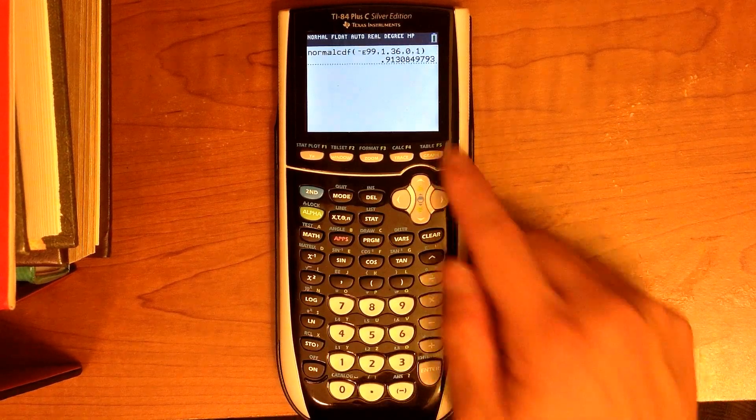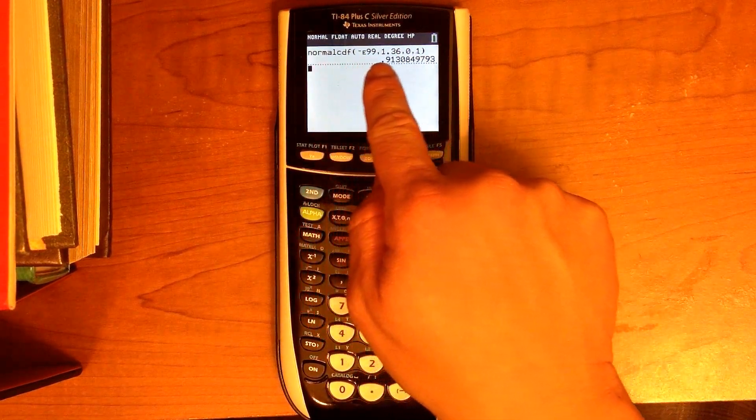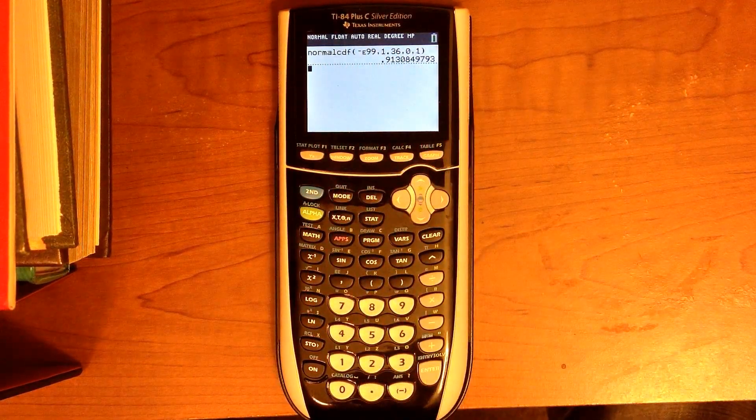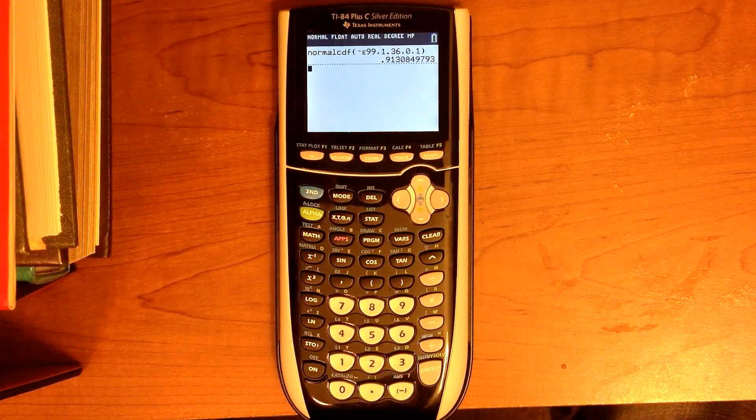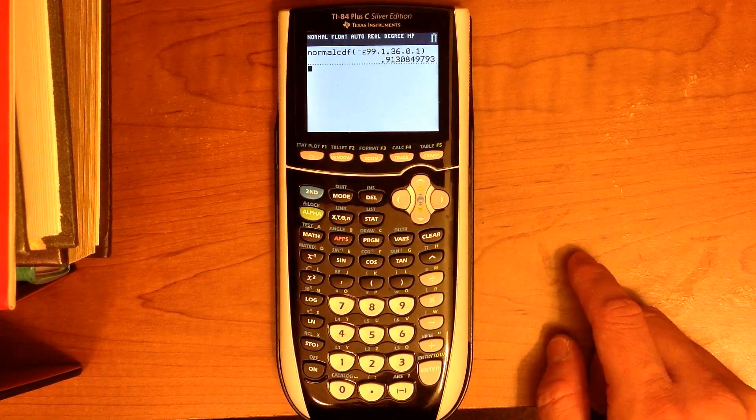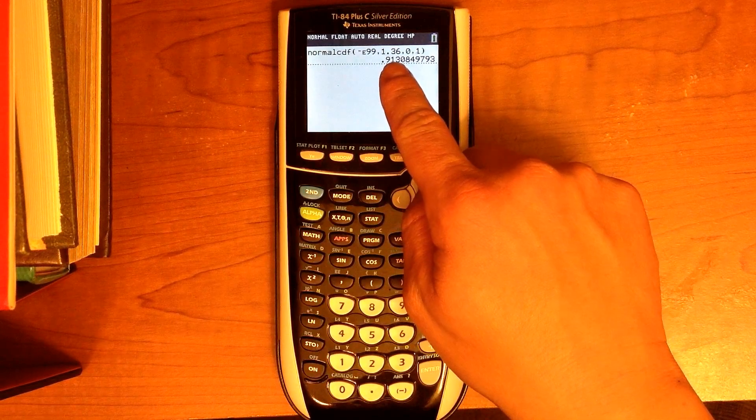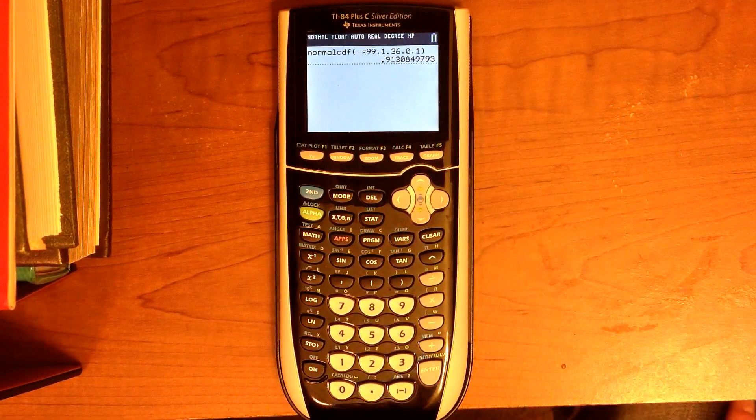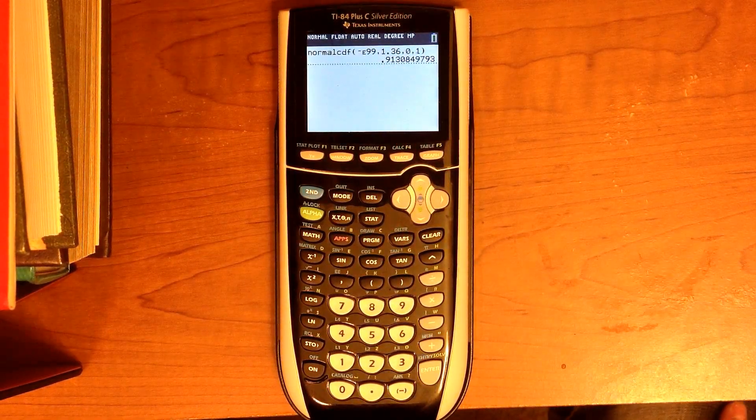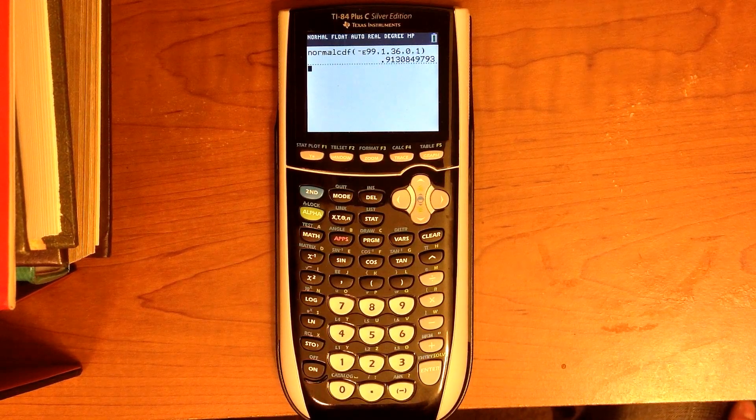Now, what you will notice here, if you have a TI-83, you're going to have to enter these terms manually. You're going to have four arguments: the lower limit, comma, the upper limit, comma, and then the mean and the standard deviation. So you're going to do that on the TI-83 or if you have an older TI-84.